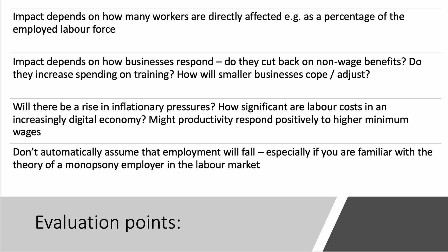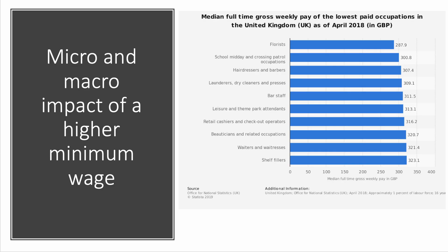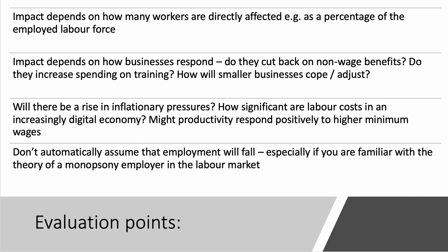Here are four evaluation points to do with an increase in the minimum wage. First of all the impact will depend on just how many workers are directly affected. If we think back to that slide showing the lowest paid workers — you know that they have low pay, and most of these people would be affected presumably by a minimum wage of £9 an hour — but how many people actually work in those jobs? Most estimates would think that an increase in minimum wage to say £9 would probably directly affect between one and one and a half million people in the labour market, around 5% of people in employment.